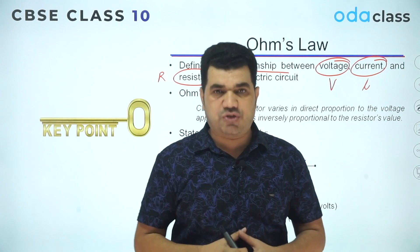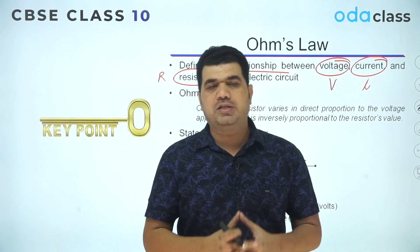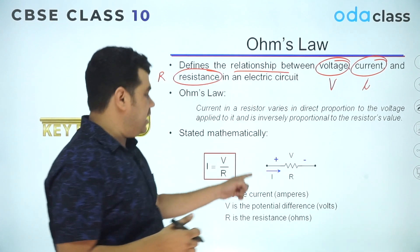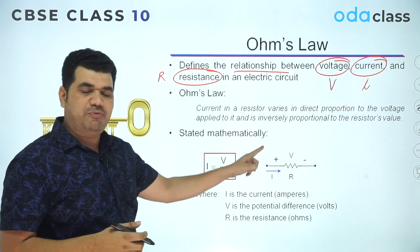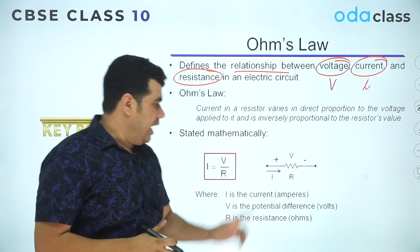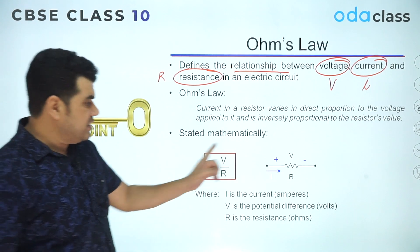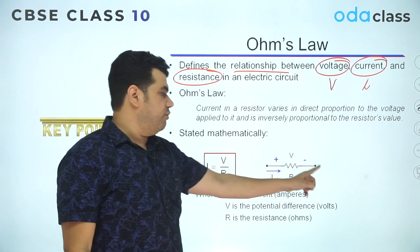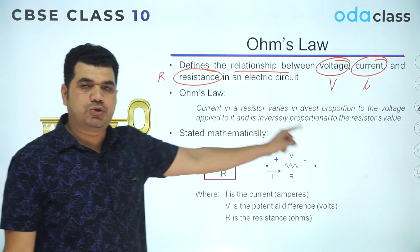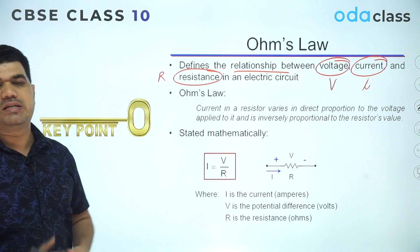The current flows due to the potential difference between two points of a resistance, and the direction of current flow is always from higher potential to lower potential. Here, positive stands for higher potential and negative for lower potential. The potential difference, denoted by capital V, is the difference between these two points.